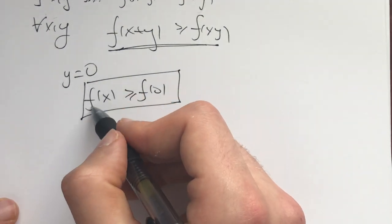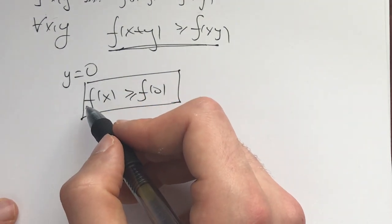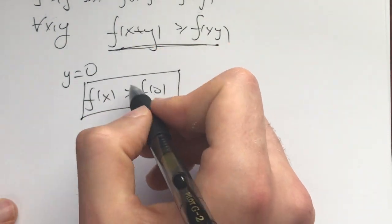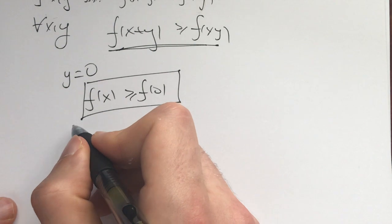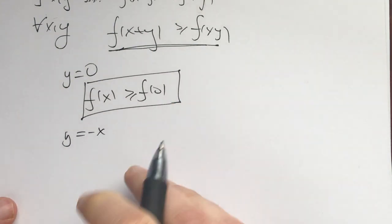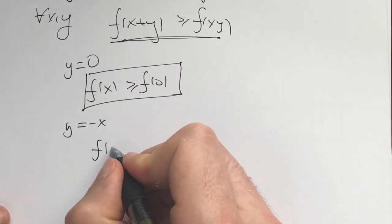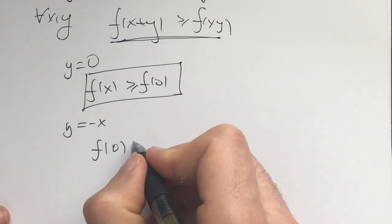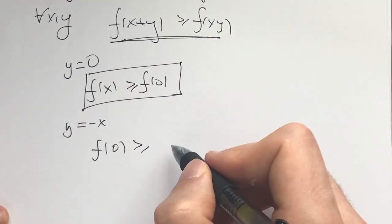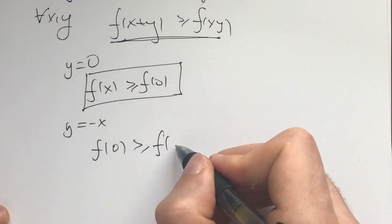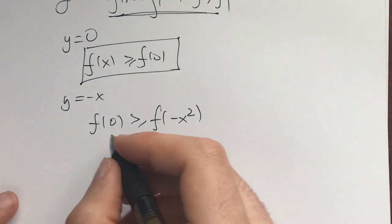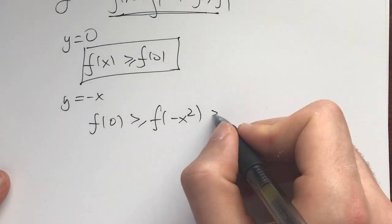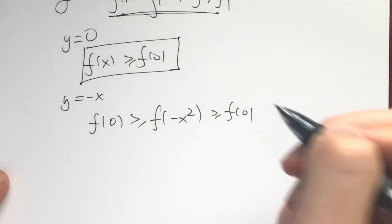Now, to prove f(x) is a constant, what I need is to have f(0) on this side. So the next thing I plug in is y=-x. And what we get is that f(x-x) = f(0) ≥ f(x·(-x)) = f(-x²). Now, we know that f(-x²) ≥ f(0) by this thing right here.